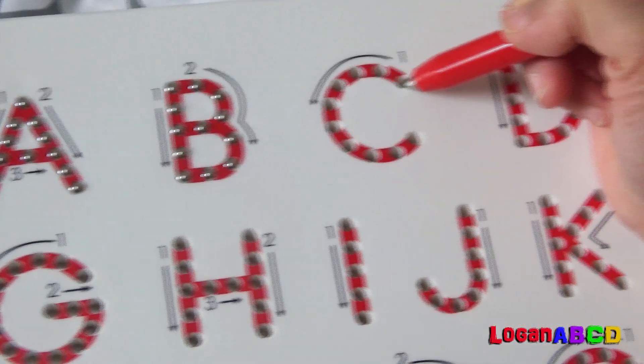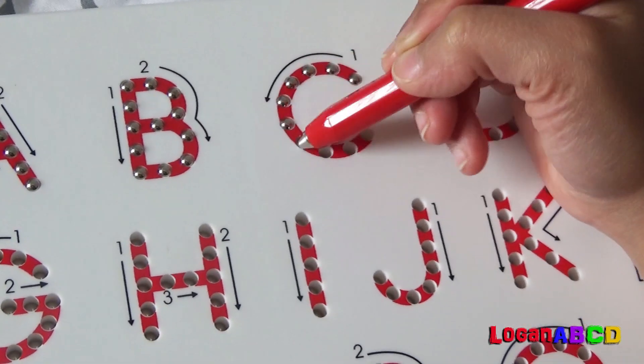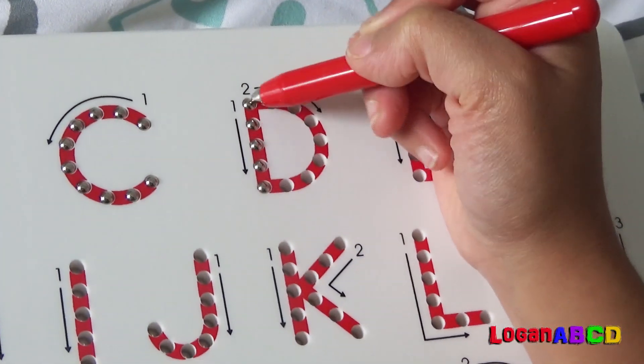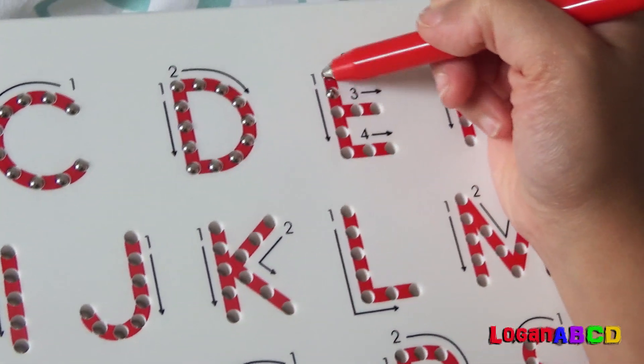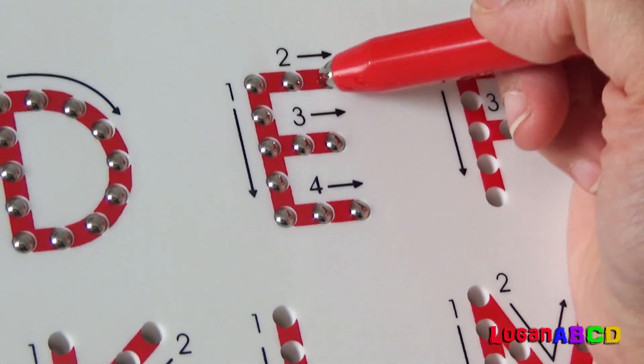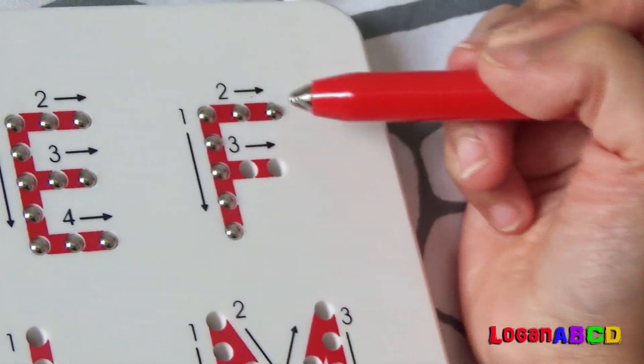C, C, C for color. D, D, D, D for day. E, E for eggs. F, F for flamingo.